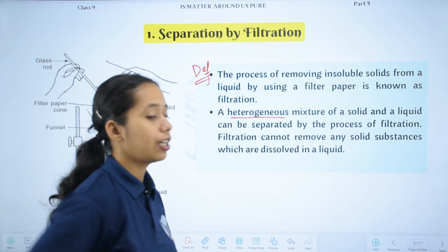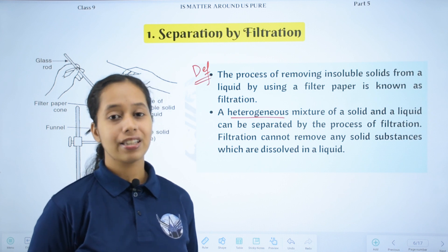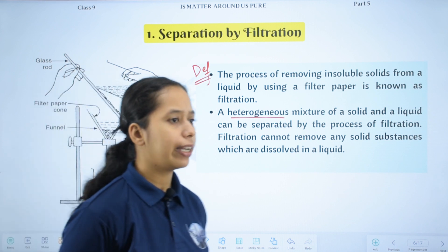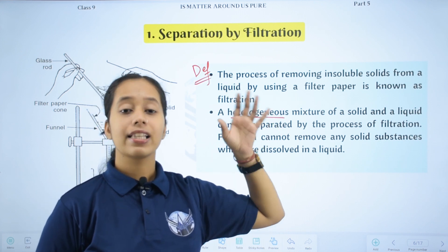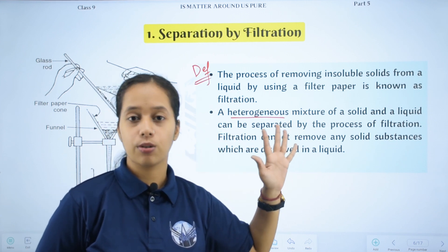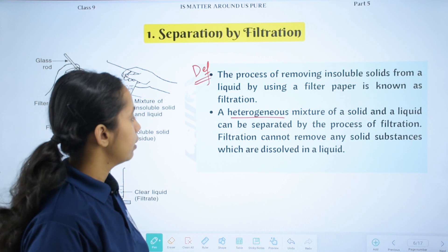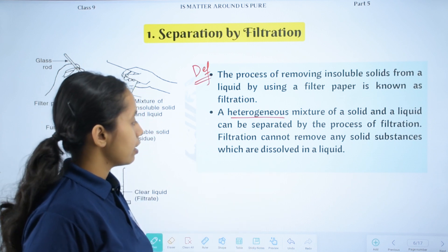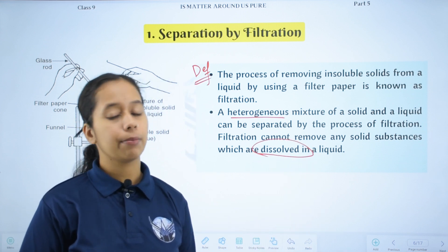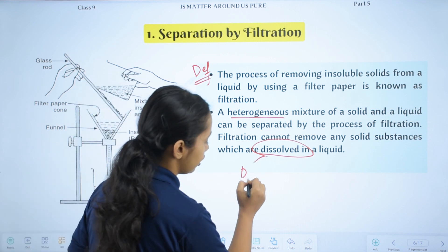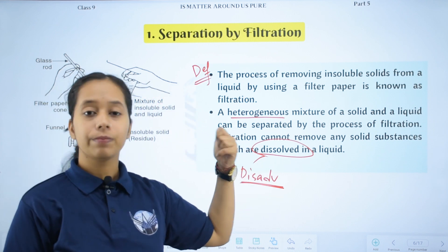Heterogeneous and homogeneous mixtures - heterogeneous mixtures are where the components are not uniformly mixed, and we can separate them. Homogeneous is like one uniform layer. Filtration cannot remove any solid substances which are completely dissolved in a liquid - that is the disadvantage of filtration. Dissolved solids cannot be separated by filtration.